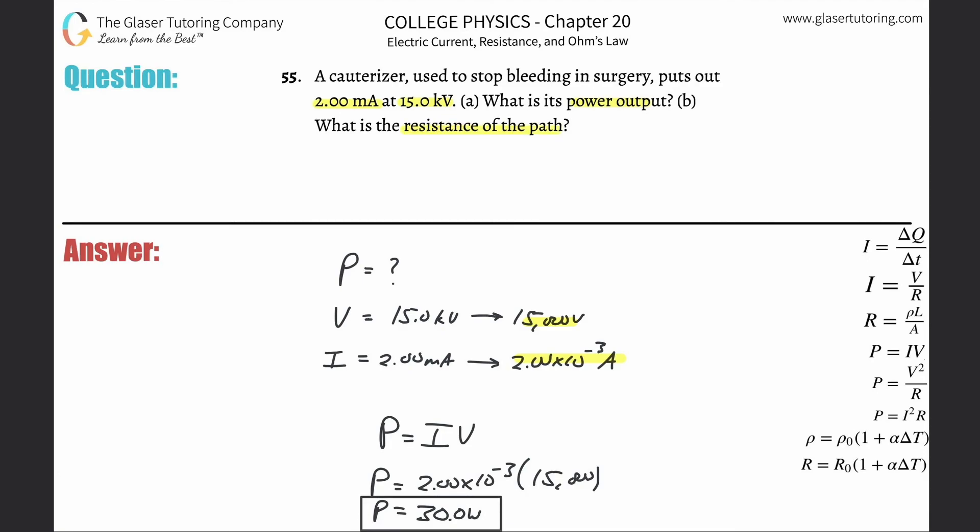Alright. And then the letter B, it says, what is the resistance of this path? So now we have probably several ways we can find this. The best way to probably do it would actually be to use your power formulas to figure out the resistances.